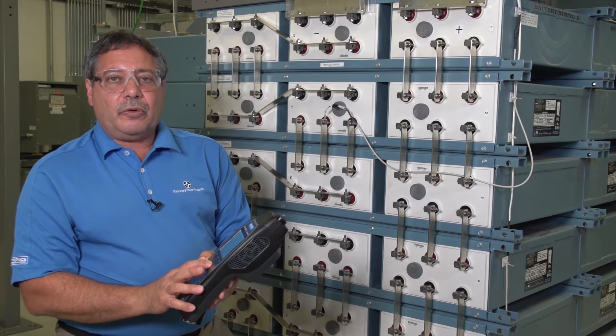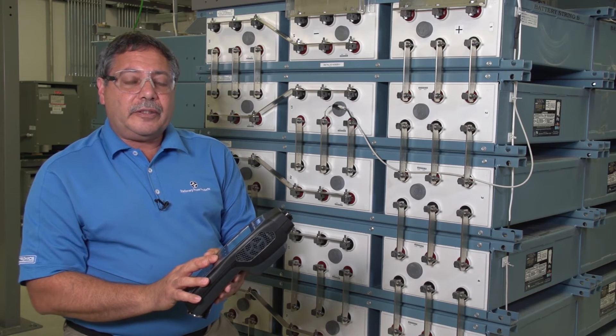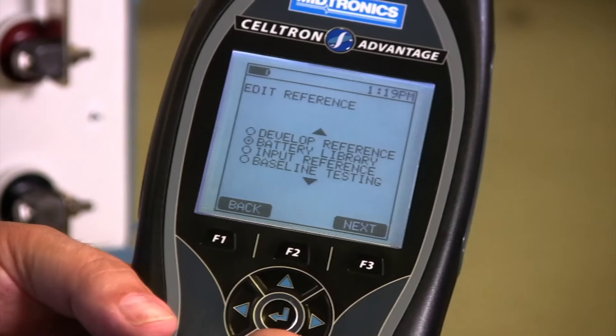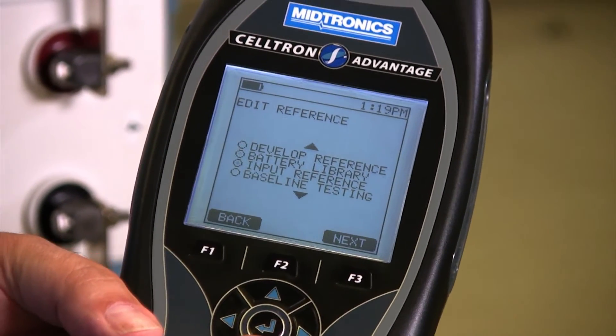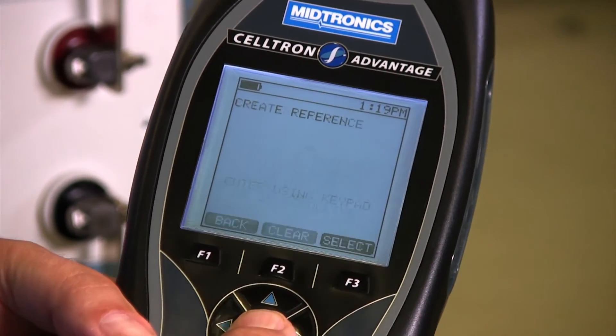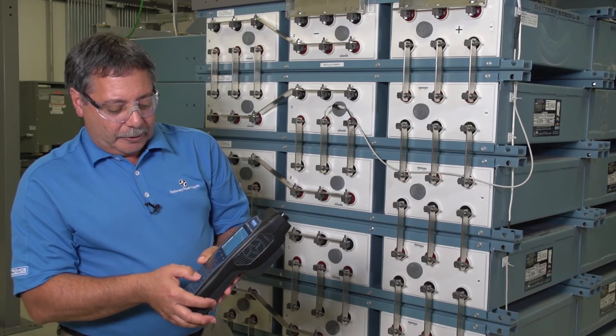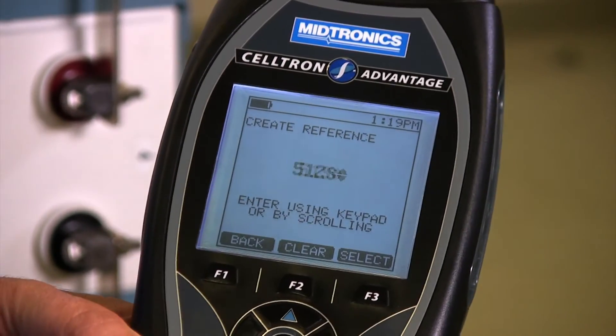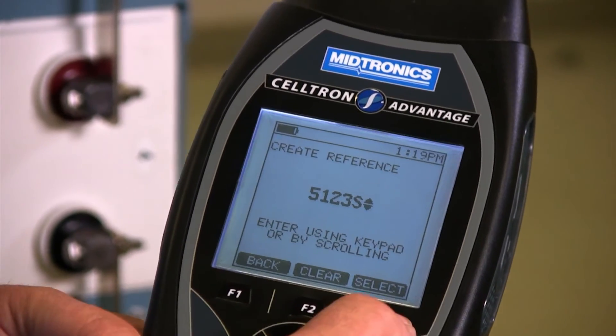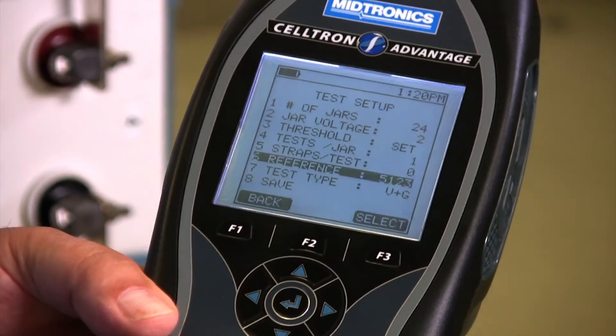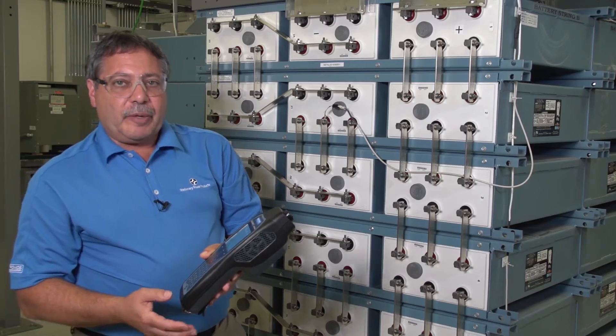Next we want to go to our reference value that we're going to set for our test. I happen to have the value. So when I go down here, I could just go to input the reference and I could use my keypad to put in 5123 and hit select. And now that's keyed in for my test.